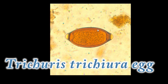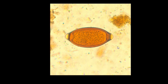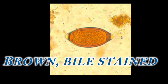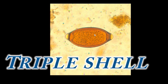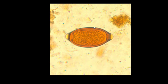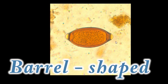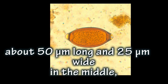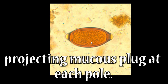This is the Trichuris trichiura egg. The egg has a characteristic appearance — it is brown in color, being heavily bile-stained. It has a triple shell: outer, middle, and inner layer, with the outermost layer stained brown. It is barrel-shaped, about 50 micrometers long and 25 micrometers wide in the middle, with a projecting mucus plug at each pole. You can see there are two mucus plugs.